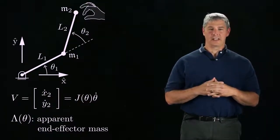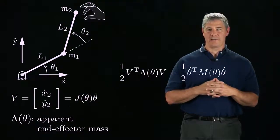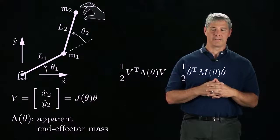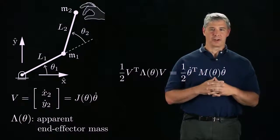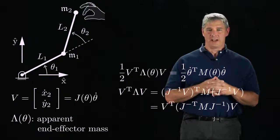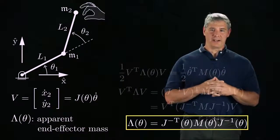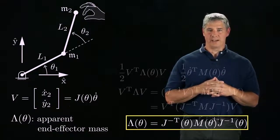To see how lambda is related to the mass matrix M, we can equate the kinetic energy expressed in the end effector velocity and the joint velocity. If the Jacobian is invertible, we can express the joint velocity as j inverse times v, which gives us the relationship we were looking for. The configuration-dependent end effector mass is equal to j inverse transpose times M times j inverse.